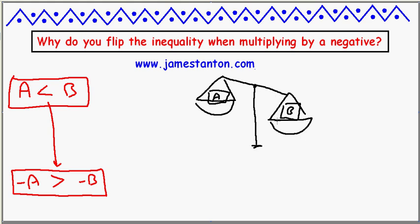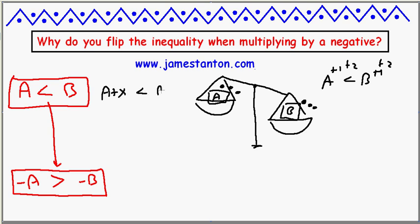What do we like to believe about this model? Well, if I add an apple to both sides, then I believe nothing's going to change — the scales will still be tipped in this manner. So I've had a is less than b, adding one to both sides, I still believe the inequality sign behaves the same. If I ever add another two apples to both sides, I still believe it's tipped in this way. So I'd like to believe that a plus x will always be less than b plus x — if a is less than b, then adding x to both sides preserves the inequality.